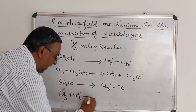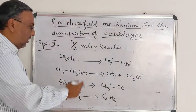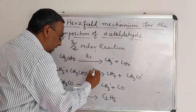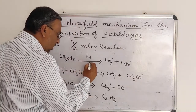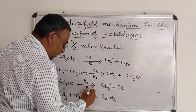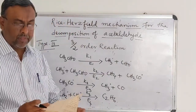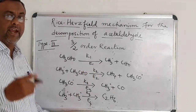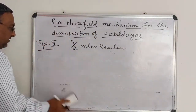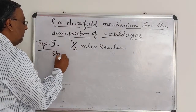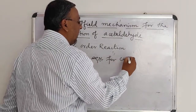In the chain termination step, the methyl radical combines to give ethane. The rate constants of these four steps are taken as K1, K2, K3, K4, and the corresponding activation energies are E1, E2, E3, E4. Now we are going to write the steady-state equation for the methyl radical, which is the reactive intermediate in this case.